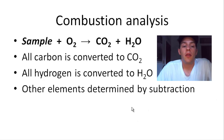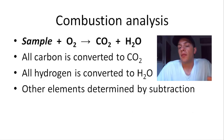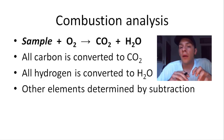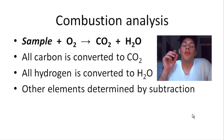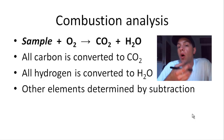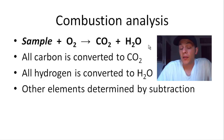Any other elements that are in your sample can be determined by subtraction. If you have the mass of your original sample before you started the reaction, and you were able to calculate the masses of carbon and hydrogen by analyzing your combustion products, you can take the mass of your original sample and subtract the combined masses of carbon and hydrogen to get the mass of any other element originally present.